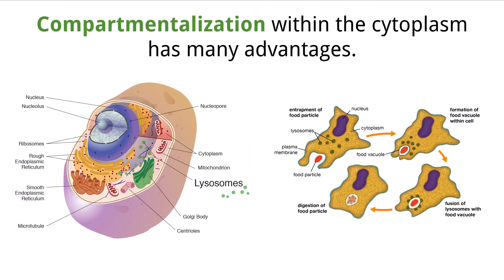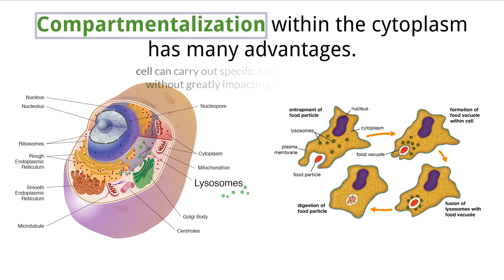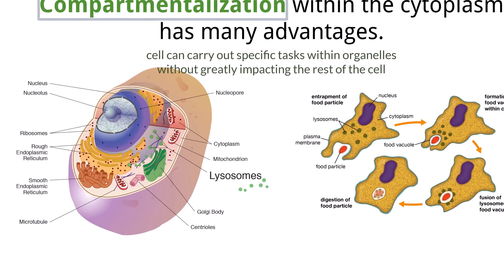Continuing on with advantages of organelles and compartmentalization, eukaryotic cells have many organelles found within the cytoplasm of the cell, separated by their own membranes. Some advantages of having these separate compartmentalized components is that the cell can carry out specific tasks within them without greatly impacting the rest of the cell. We can see examples of this within organelles like lysosomes and phagocytic vacuoles.